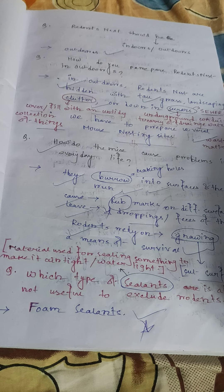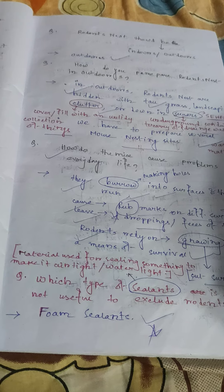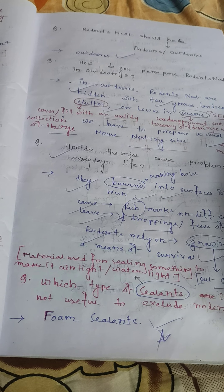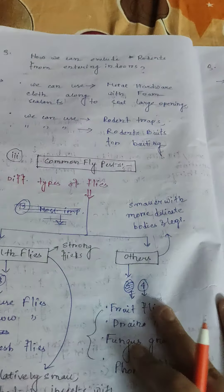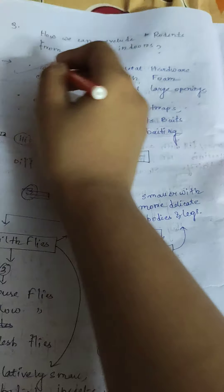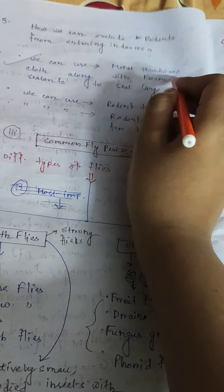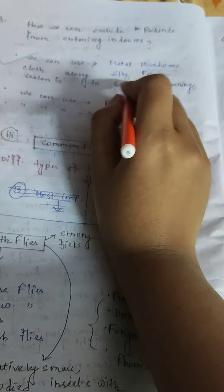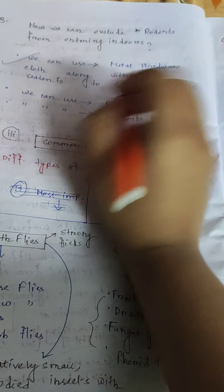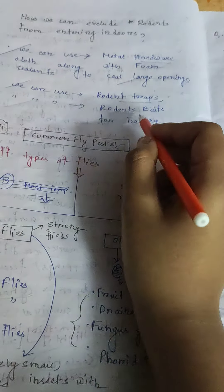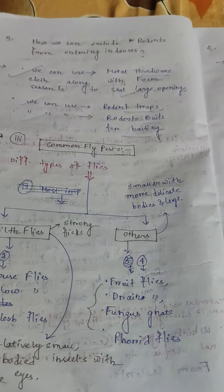Faces of cockroaches have noticeable oily odors. Oily-type odors are produced from the feces of cockroaches. Glue traps are used to monitor cockroach activity.